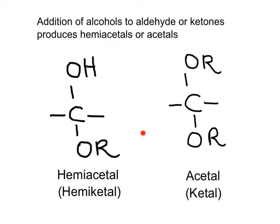Now we need to study the addition of alcohols to aldehydes and ketones. The products of these reactions are hemiacetals and acetals. A hemiacetal is a product in which you will observe a carbon, which was the carbonyl, bonded to an OR group coming from an alcohol, and the oxygen that was the carbonyl has been reduced to a hydroxyl group. In the acetal, the carbon that was the carbonyl is now bonded to two OR groups coming from the alcohol.